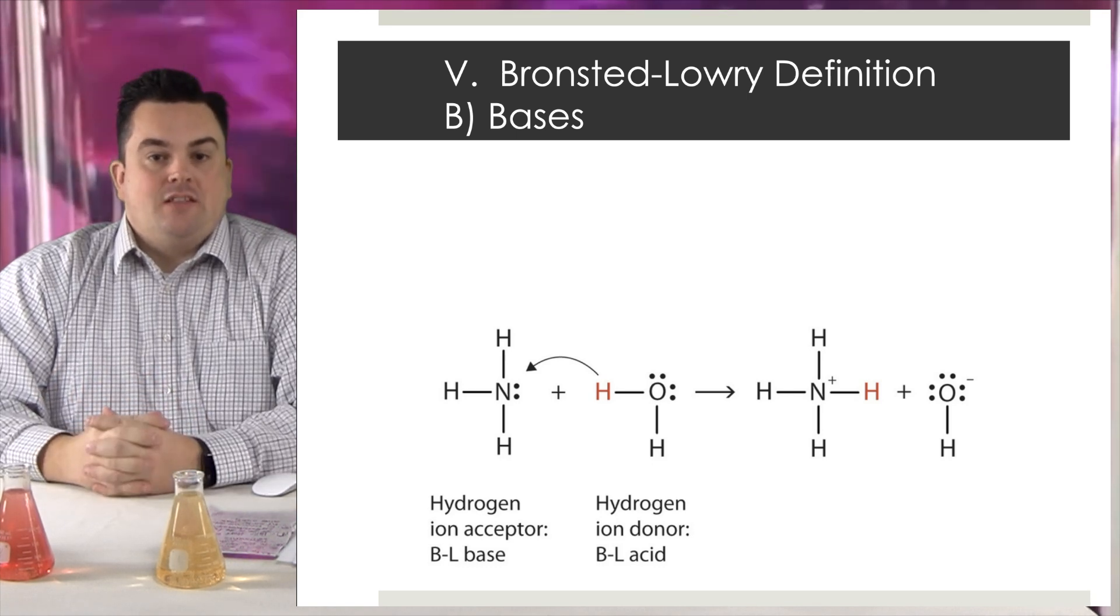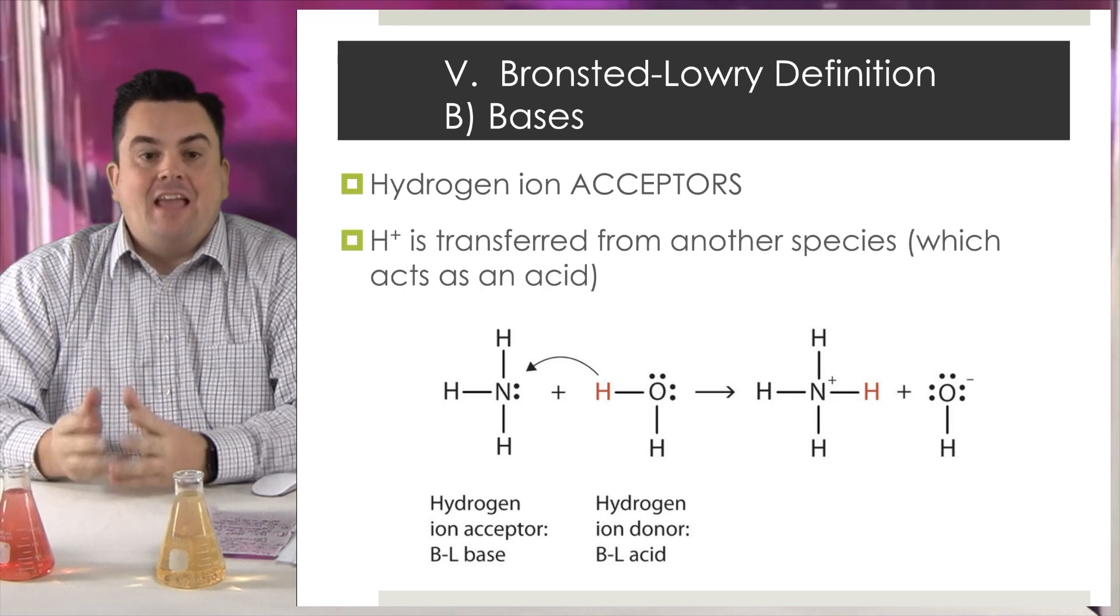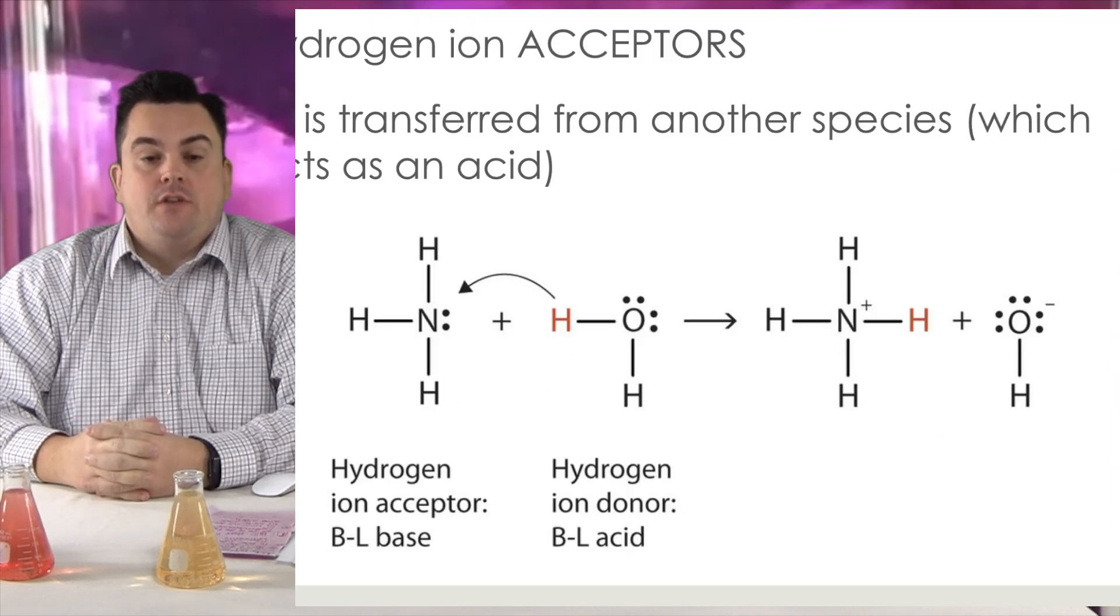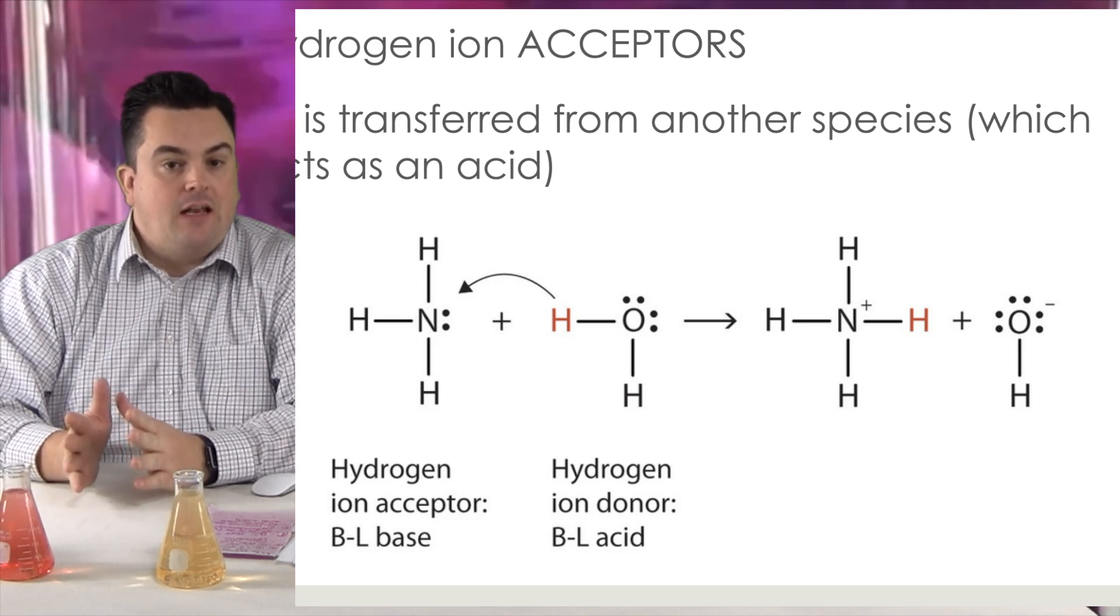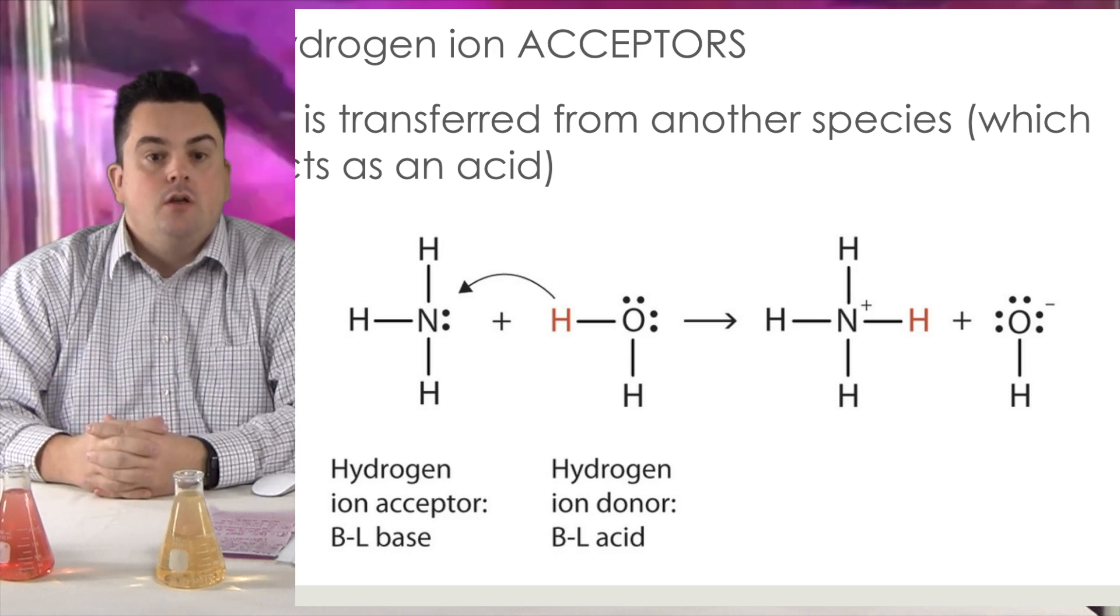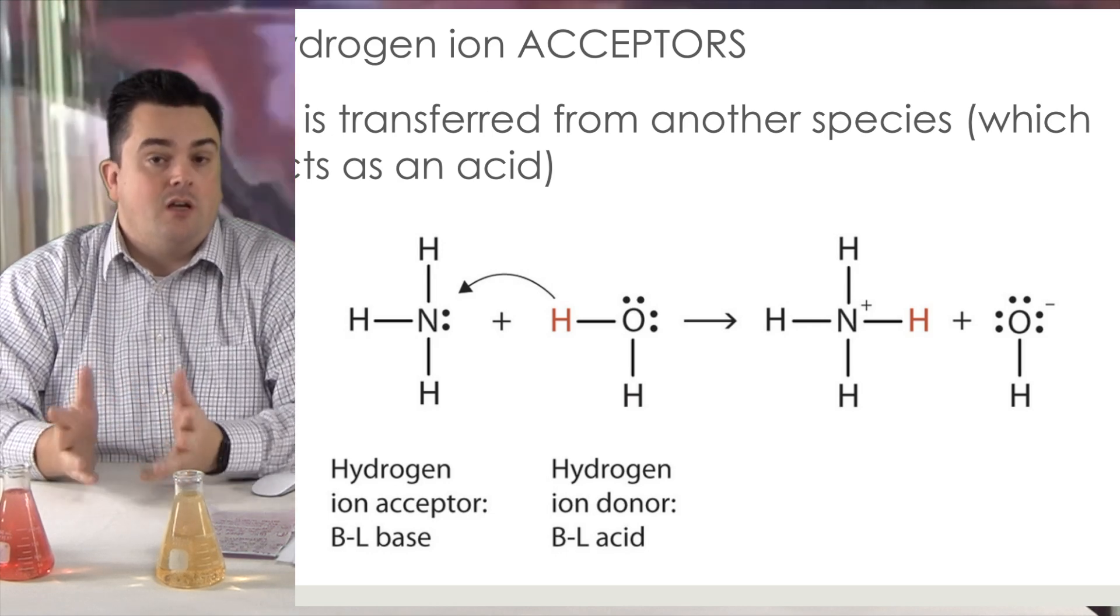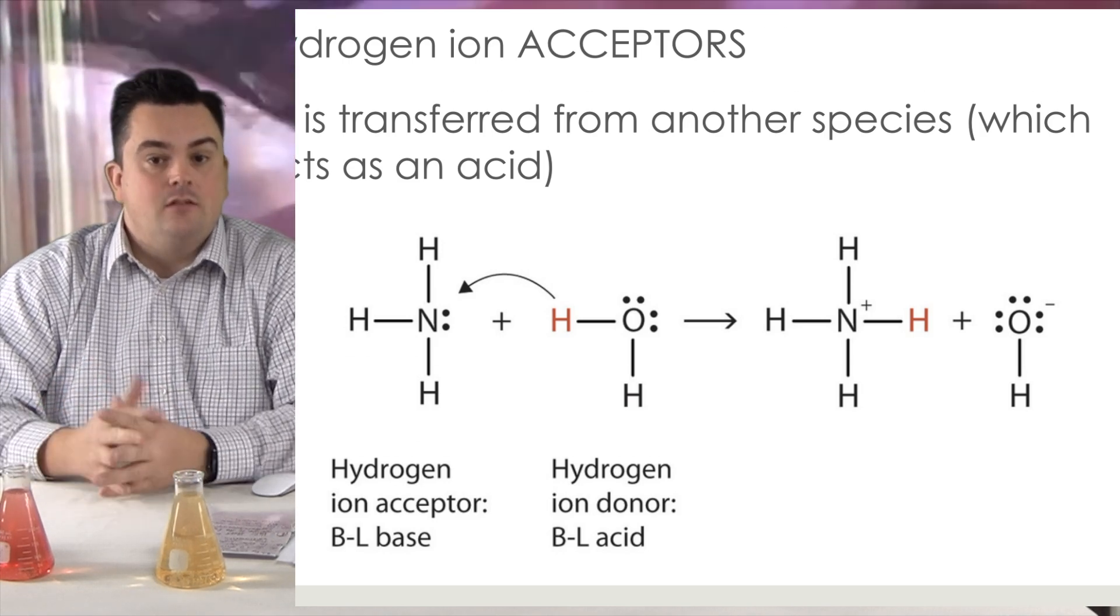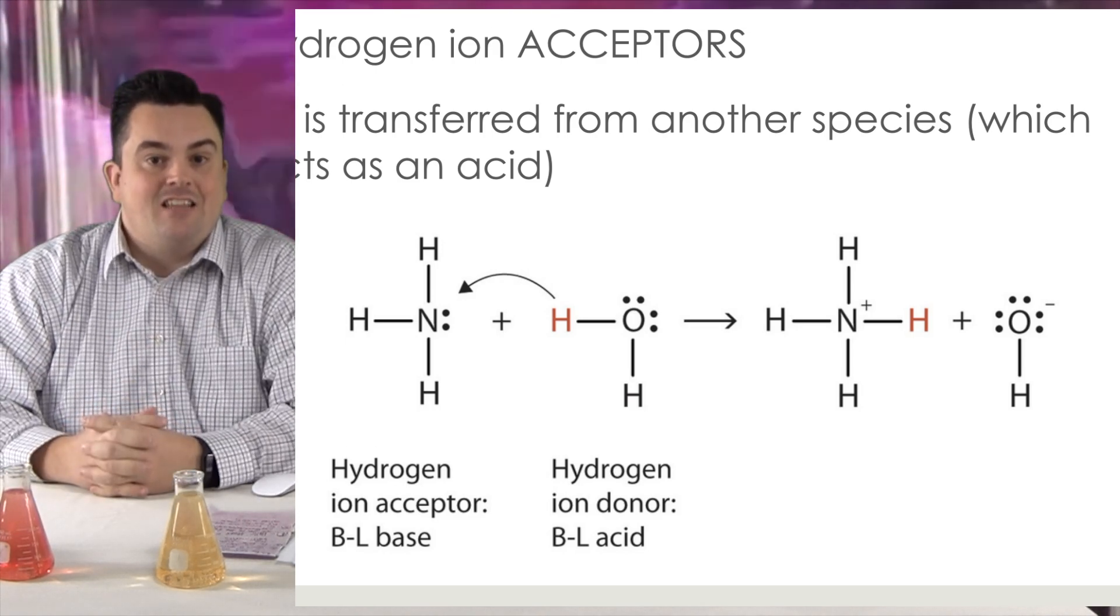Continuing on with our Bronsted-Lowry definition, bases. Bases are hydrogen ion acceptors. H plus is transferred from another species, which acts as an acid. So if you take a look at our example, we've got NH3 and water. Water, if you take a look at that H on the left, it's going to be donated to the hydrogen accepting NH3. So NH3 becomes NH4 plus and the H2O becomes OH minus. Now because H2O donated that H plus, it is the acid. And because NH3 accepted the H plus, that makes it the Bronsted-Lowry base.